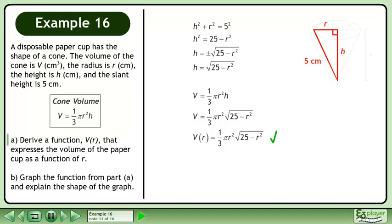We can write it as V equals 1 over 3 pi r squared times the square root of 25 minus r squared.